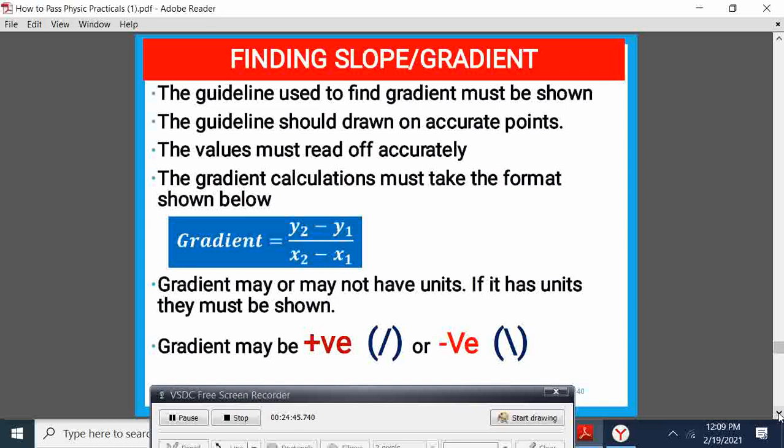Now, how do we find the gradient? The guideline used to find the gradient must be shown. The guideline should be drawn on accurate points, and the values must be read off accurately. The gradient calculation must take the format y2 minus y1 divided by x2 minus x1. The gradient may or may not have units. If it has units, they must be shown. So, there you will be guided by the equation. The gradient might be positive or negative, depending on the shape of the gradient of the line.